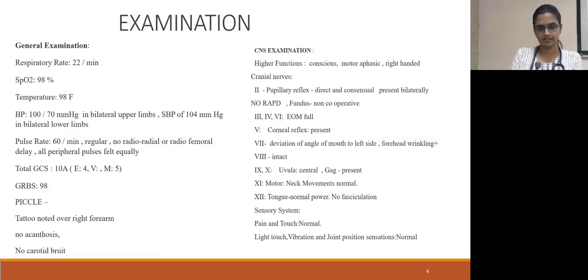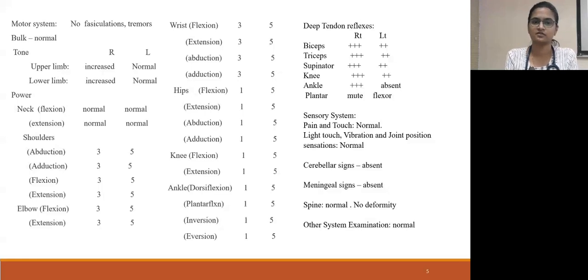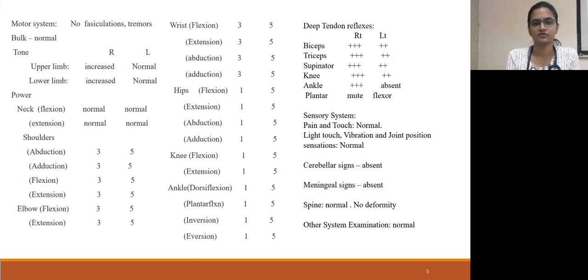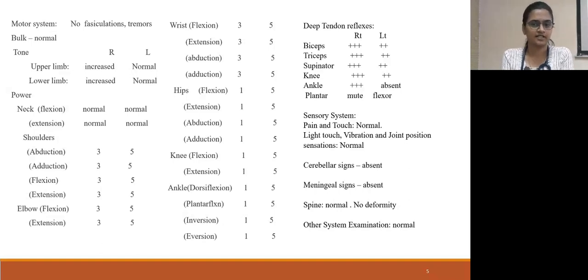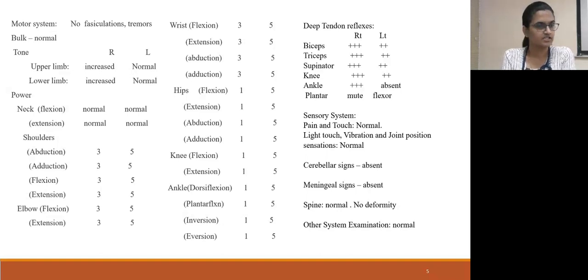Sensory system was intact. Motor system: no fasciculations or tremors, bulk was normal. Tone was increased on the right side in upper and lower limb. Power in the upper limb was 3/5 and lower limb was 1/5 on the right side; left side power was 5/5 in both upper and lower limb. Deep tendon reflexes were increased on the right side. Plantars were mute on the right side and flexor on the left side. Cerebellar signs were absent, meningeal signs were absent, and spine was normal.